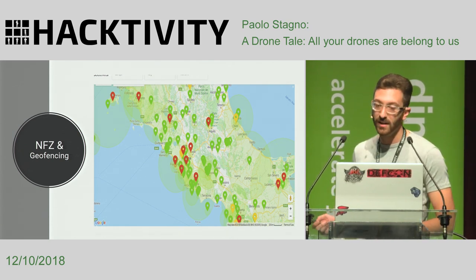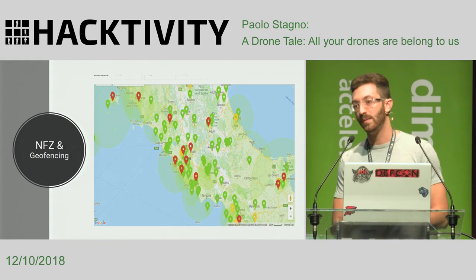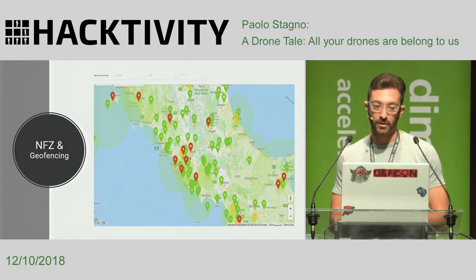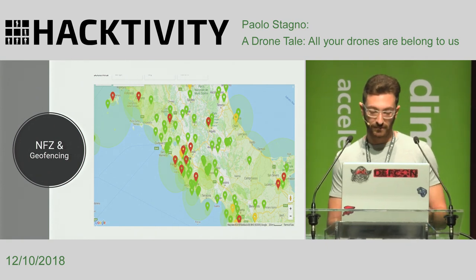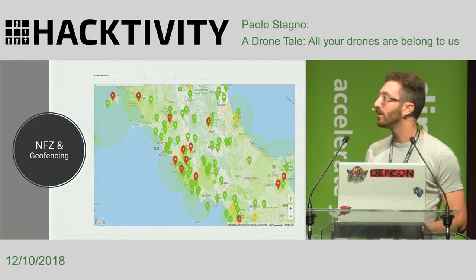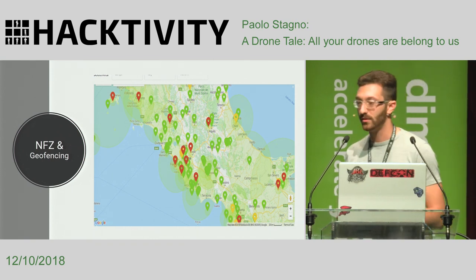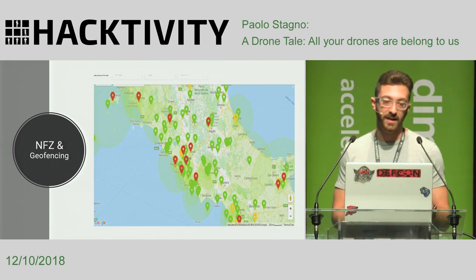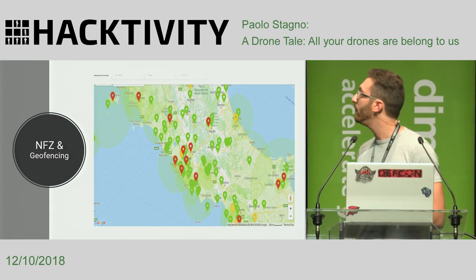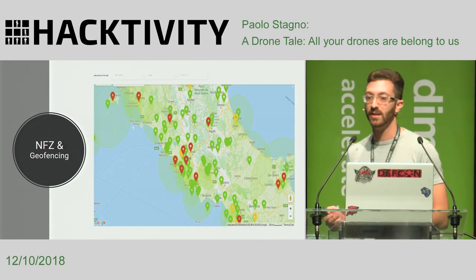The yellow zone, or authorization zone, requires a verified DJI pilot account and internet connection in order to unlock the area and fly. The red zone is the restricted zone — the area where the drone cannot fly. If you try to fly inside a restricted no-flight zone, you won't be able to. The main problem is that the no-flight zone system uses GPS, so if you don't have GPS coverage, the no-flight zone list is useless.